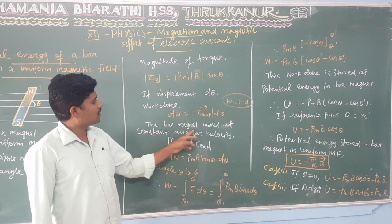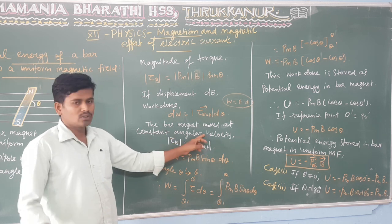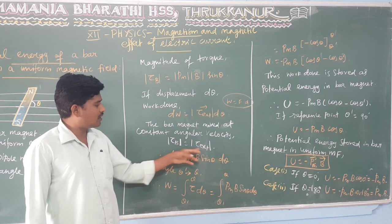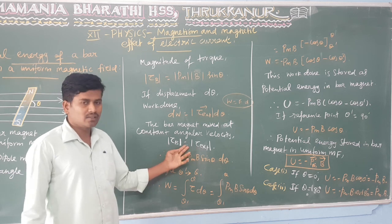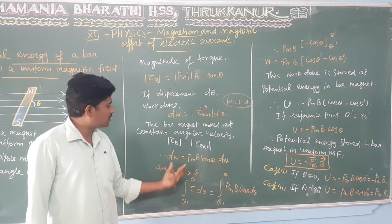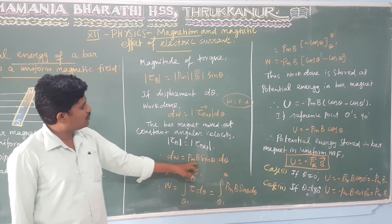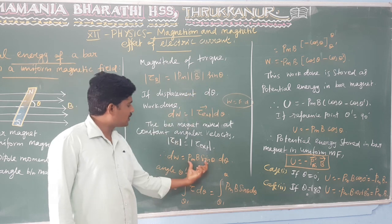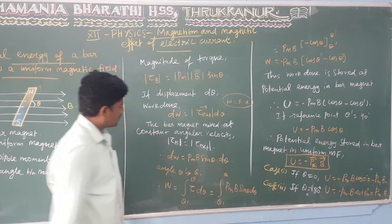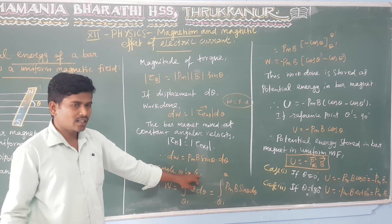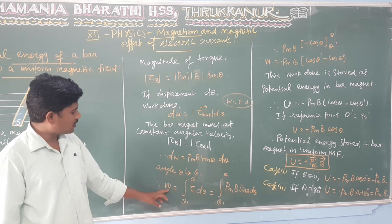The bar magnet moves at constant angular velocity — this is a slow motion. External torque and the opposing magnetic torque are equal in magnitude. So we can substitute the magnetic torque: W is equal to PM·B·sin θ times d theta.